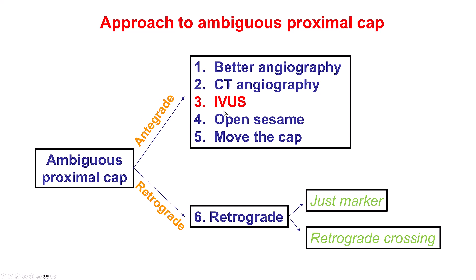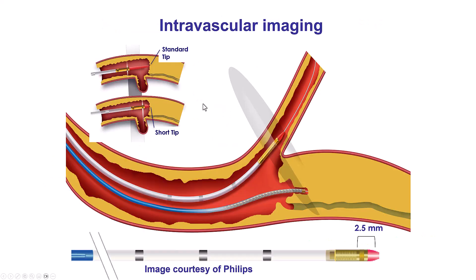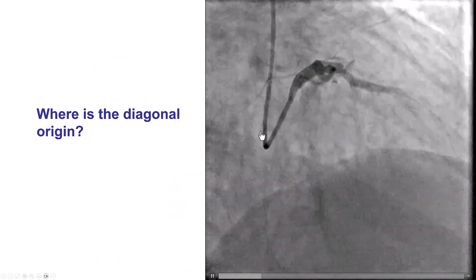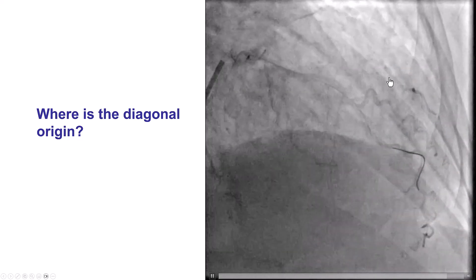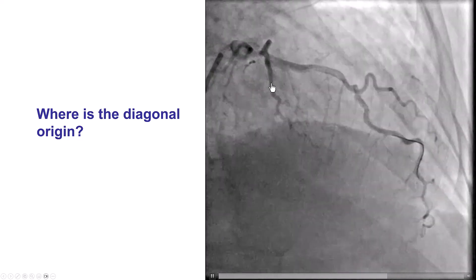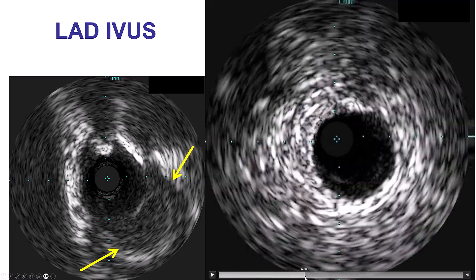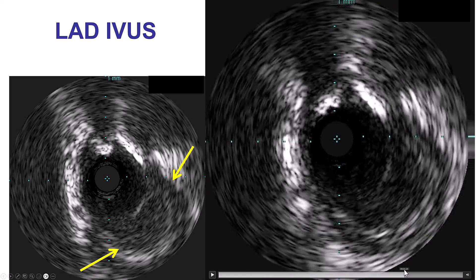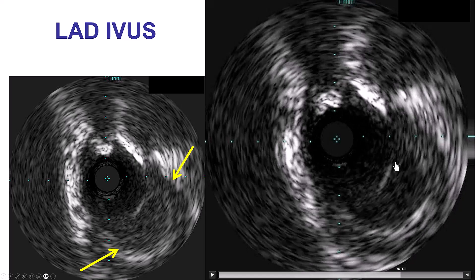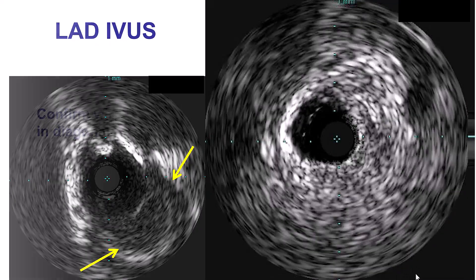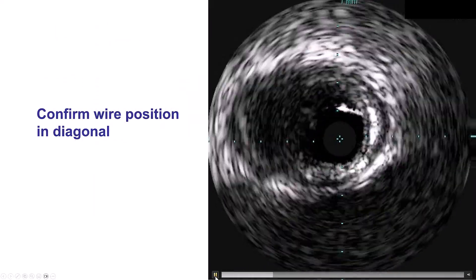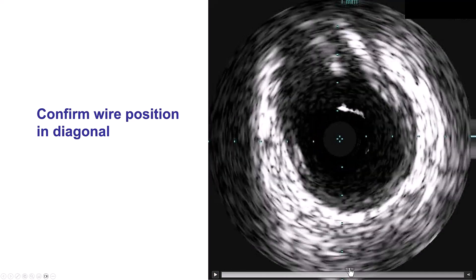A third solution for ambiguity is to do intravascular ultrasound. This requires the presence of a side branch close to the proximal cap. The IVUS catheter is advanced into the side branch, and then we can see under IVUS, as long as there is no significant calcification, what is the origin of the other vessel. For example, a patient who has a diagonal CTO but there is no stump to denote where the CTO starts. In this case, IVUS was done into the LAD, doing a pullback, and as we come back we can see the location of the diagonal branch. By doing the IVUS, we can locate the location, and also when we try to advance a guide wire, we can use IVUS to confirm that the guide wire is indeed going where it's supposed to go.